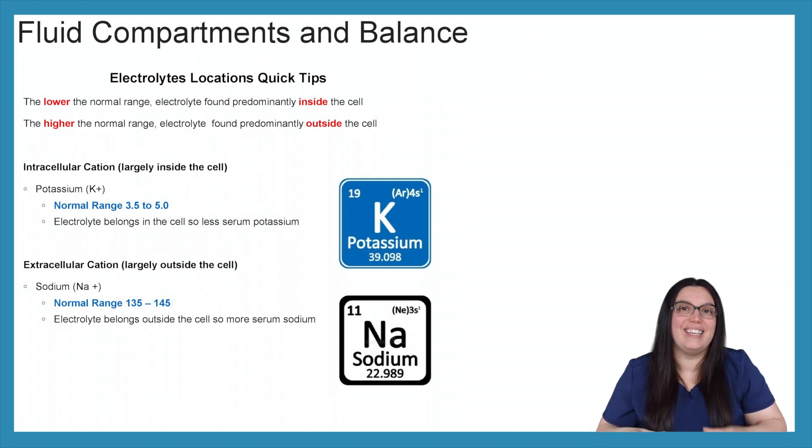So potassium is largely found inside of the cell. It's our intracellular cation. So the normal range is extremely low. Normal range is 3.5 to 5. So that lets us know that when we're pulling serum potassium levels, we're going to have lower numbers because this is primarily an intracellular cation. Whereas with sodium, we have a significantly higher normal range, 135 to 145. That's huge. So we know that this electrolyte belongs outside of the cell. I hope that was a little bit helpful in understanding where these electrolytes live and how they play a role in our serum balance.